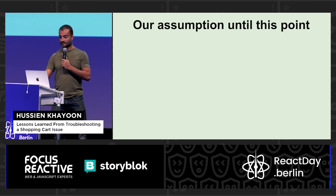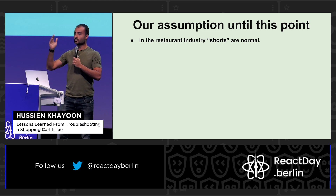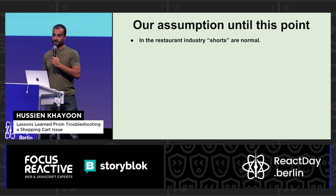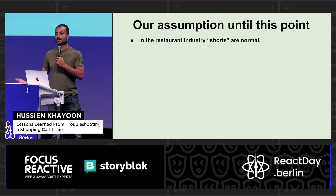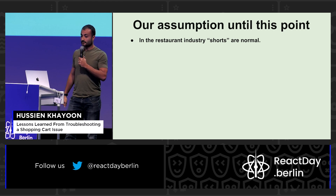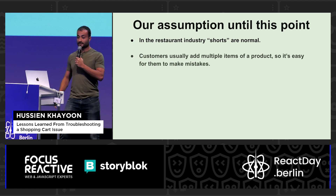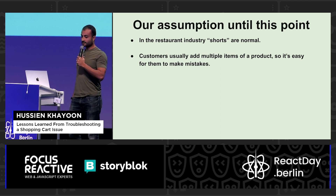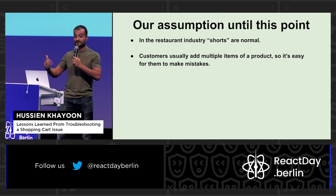In the restaurant industry in North America, there's a concept of 'shorts.' When you order from Amazon you get exactly what you ordered, but in this industry it's different. A supplier might show up with only four of the five cases of pineapple you ordered and give you a credit, or a customer might reject a case on the spot. Shorts and missing items are common. Also, people in this industry order like 20 cans of tomatoes or 50 heads of lettuce — large quantities with a lot of opportunity for mistakes.